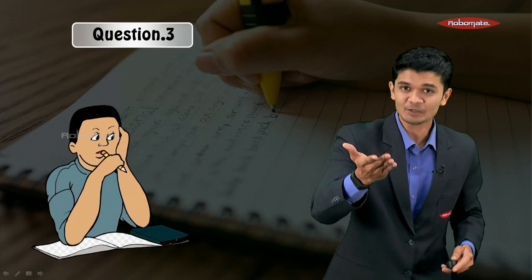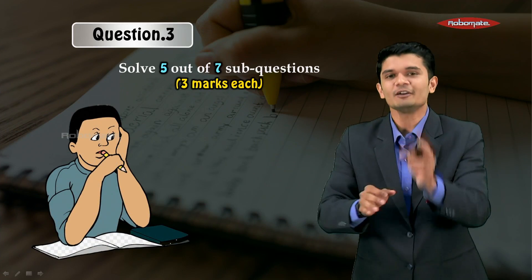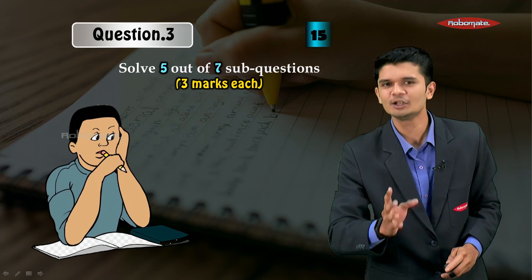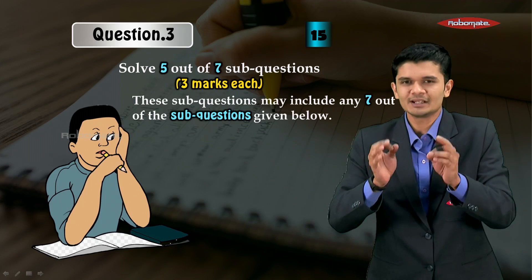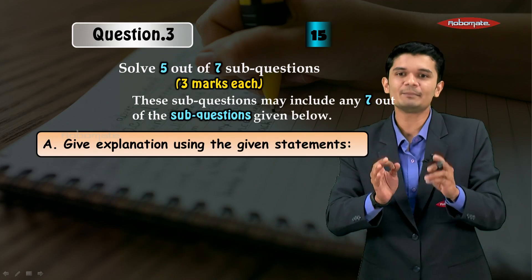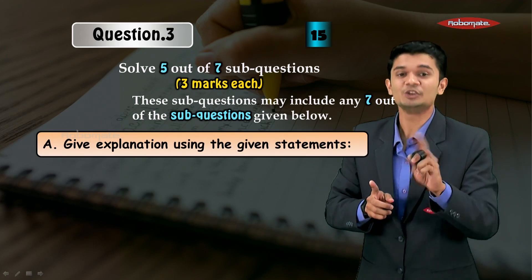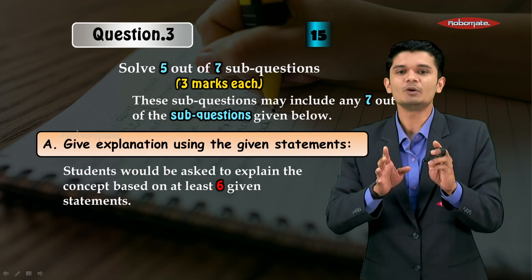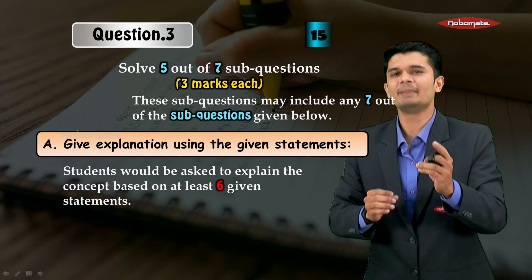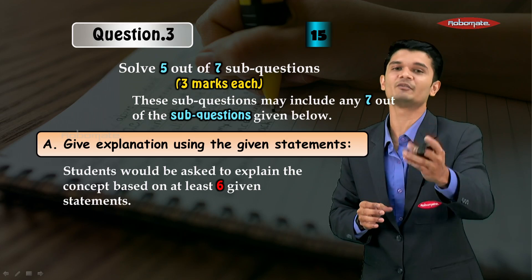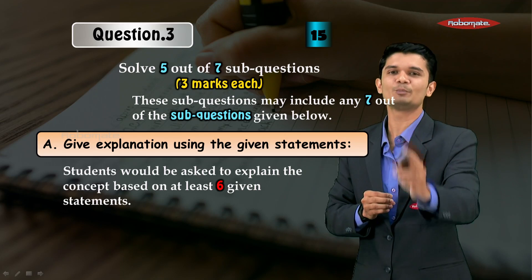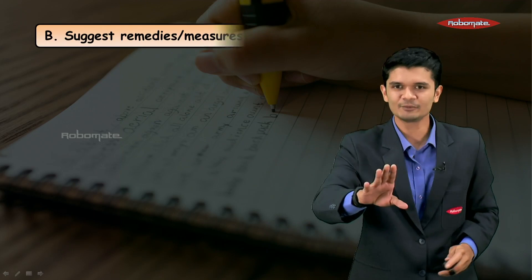Now let's go ahead for Question Number 3. Keep in mind Question Number 3 has a lot of options — here you have five out of seven questions to be answered, each for three marks, for a total of 15 marks. The first type will be questions based on giving an explanation using given statements. You will be given a question and have to explain the concept based on around six to seven statements provided. Make sure to read the question carefully, think about the concept, and then write the appropriate statements.